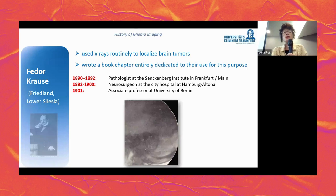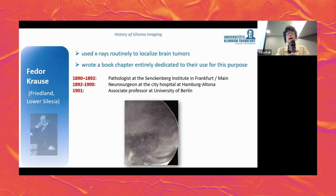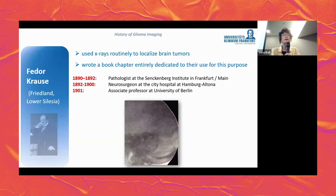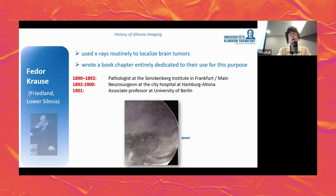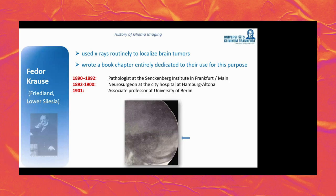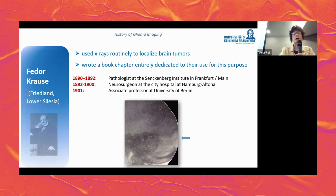The famous neurosurgeon Cushing learned early on to use X-rays of the skull to diagnose brain tumors by indirect signs of increased intracranial pressure. One report describes a boy who had a tumor in the posterior fossa; Cushing observed a rupture of the lambda suture and determined that the neurosurgeon had to operate in the posterior fossa due to the tumor in this young boy.